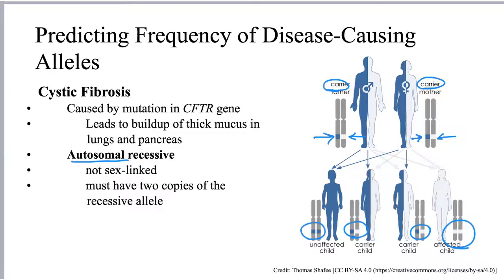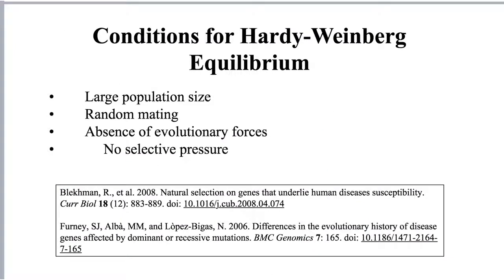You may recall from our previous lessons on Hardy-Weinberg equilibrium that there are conditions a population must meet to be considered in Hardy-Weinberg equilibrium, where allele frequencies don't change from one generation to the next — which is very uncommon in natural populations. A couple of those conditions include large population size, random mating, and the absence of evolutionary forces, meaning no selective pressure on that particular allele.